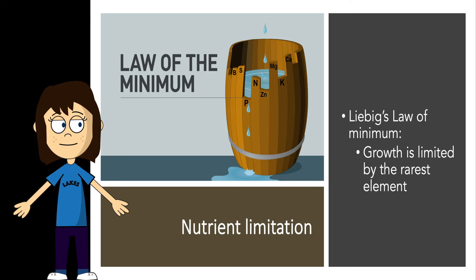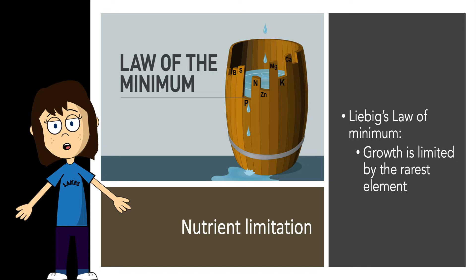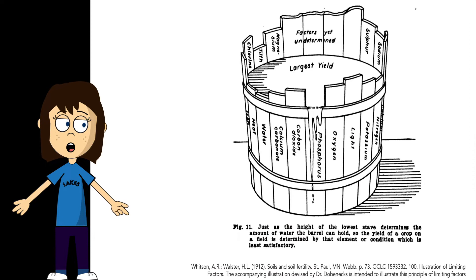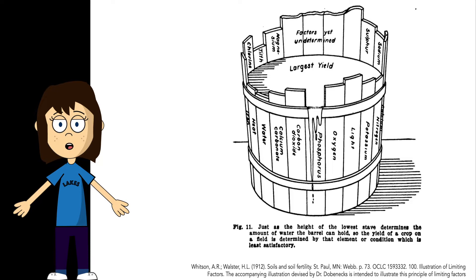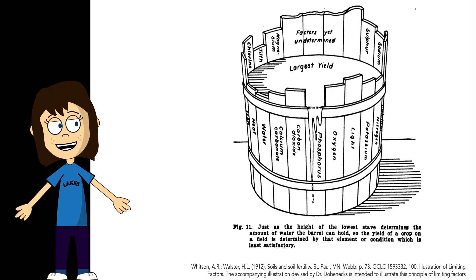We can start by thinking about nutrient limitation via Liebig's Law of the Minimum, which was a principle originally developed in agriculture in the 1800s. Originally applied to plant growth, it was found that increasing the amount of plentiful nutrients didn't increase growth. Instead, only by increasing the amount of the limiting nutrient — the one that was the most scarce in relation to need — did plant growth increase. Representing Liebig's Law of the Minimum as a barrel has been around a long time. This is an illustration from 1912 that shows: just as the height of the lowest stave in this barrel determines the amount of water the barrel can hold, so the yield of a crop on a field is determined by the element or condition which is least satisfactory.